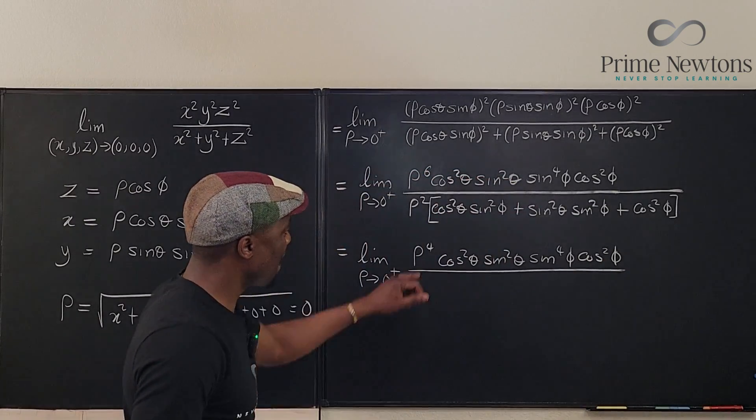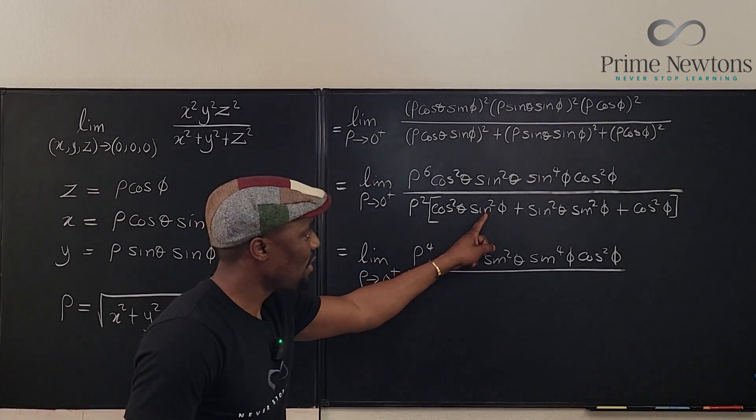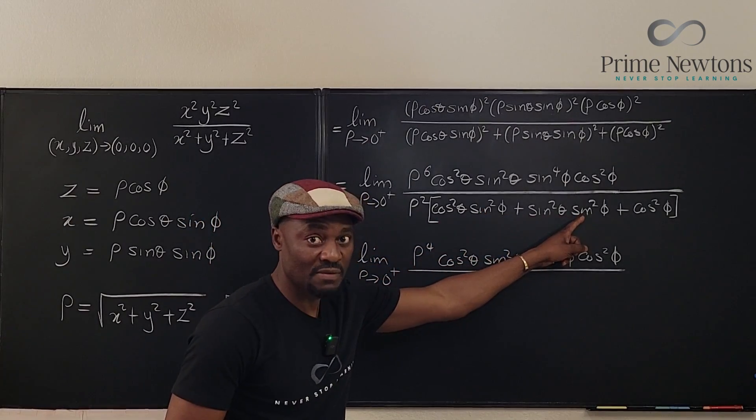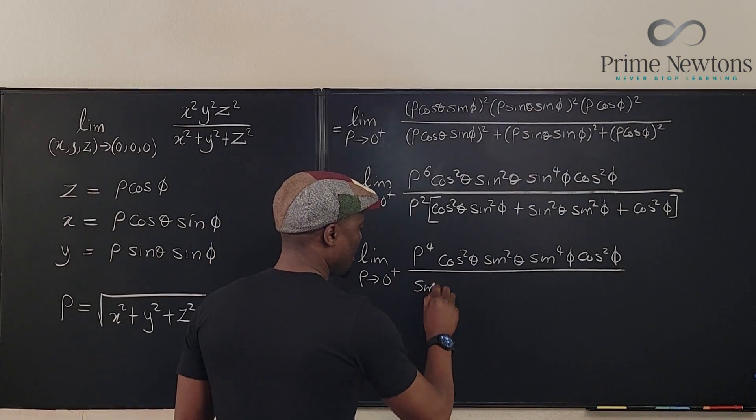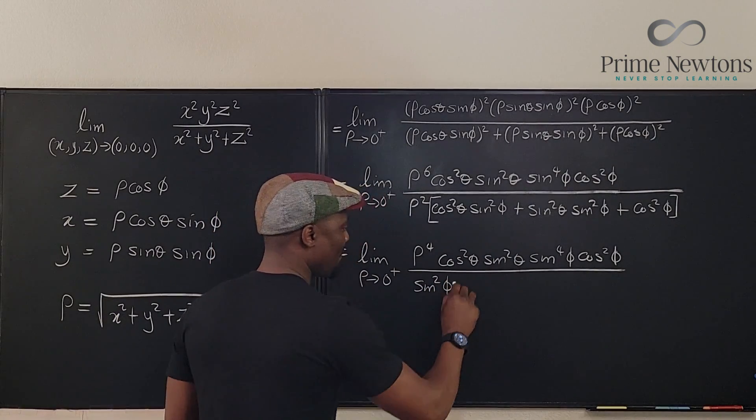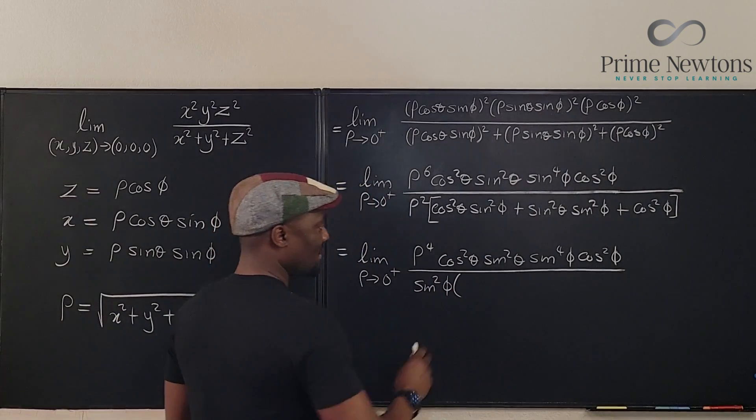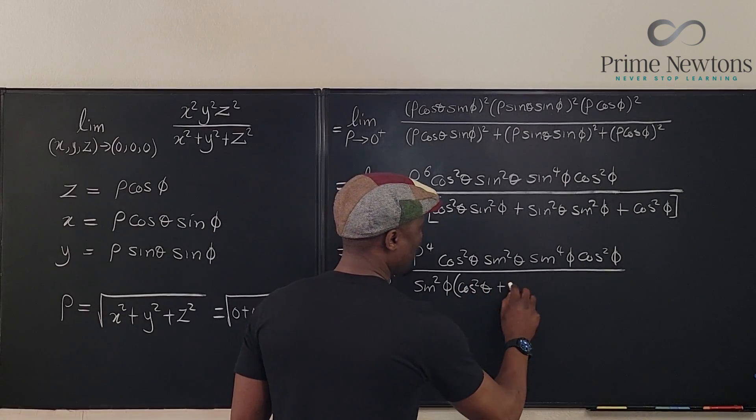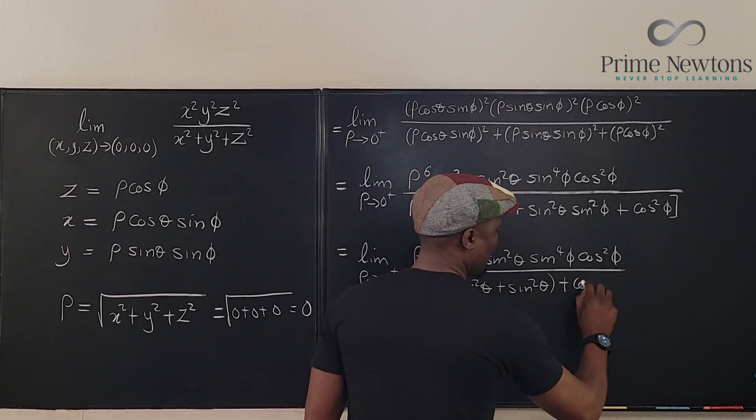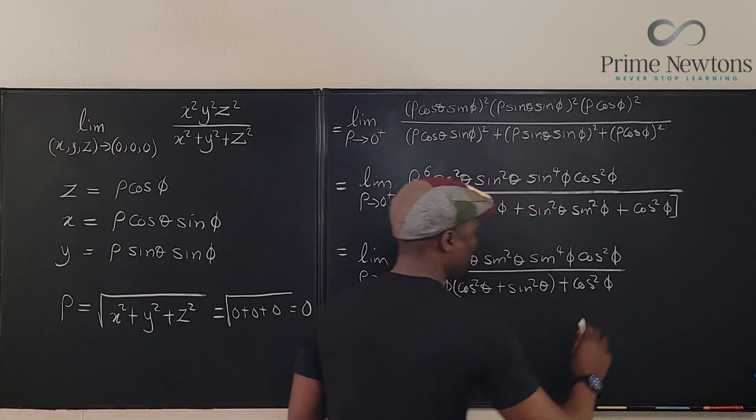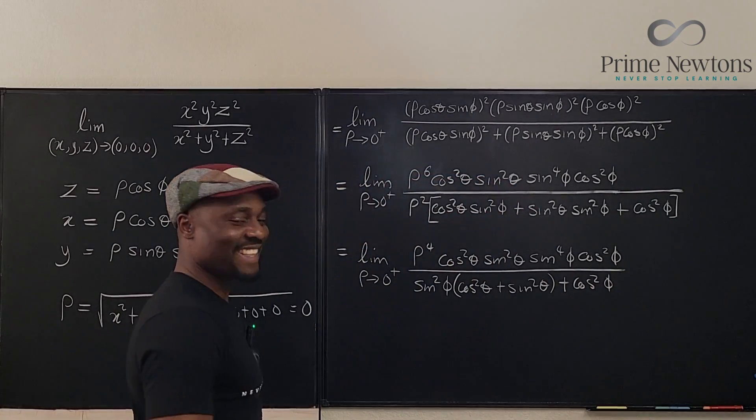And in the denominator now I have, so I have sine squared phi plus sine squared phi. So I can pull sine squared phi out. So I have sine squared phi into, this is going to be cosine squared theta plus sine squared theta plus cosine squared phi. Nice. I like that.